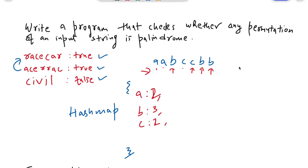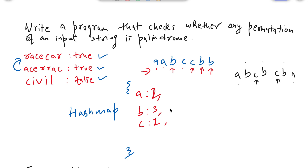We can build many permutations of this string which are palindromes. One permutation would be 'abcbcba' — here the count of 'a' is two, 'b' is three, and 'c' is two. We can rearrange and build many palindrome permutations. The main idea is: in a palindrome we can have at most one character whose count is odd. All other characters' counts must be even. Here count of 'a' is even, count of 'c' is even, and count of 'b' is odd — so we have at most one character whose count can be odd.